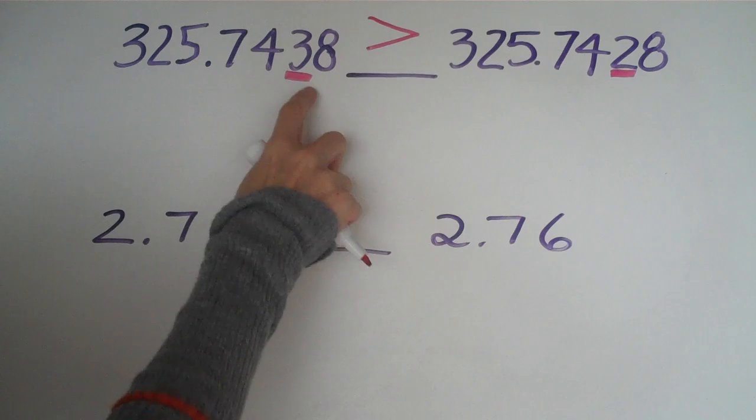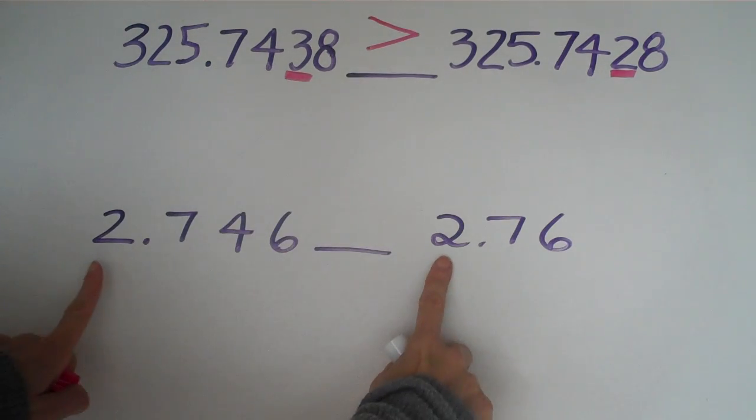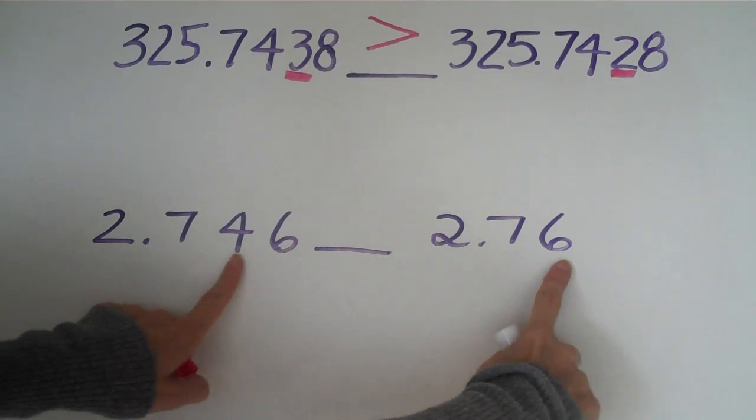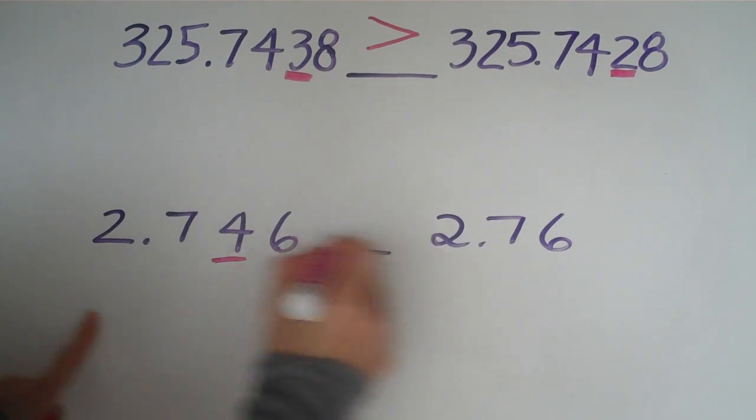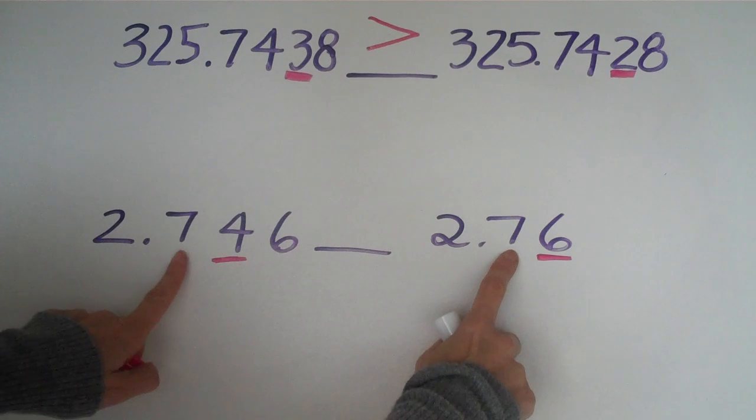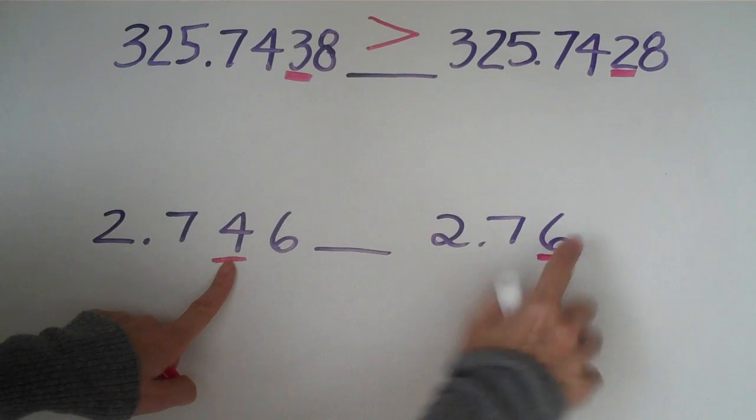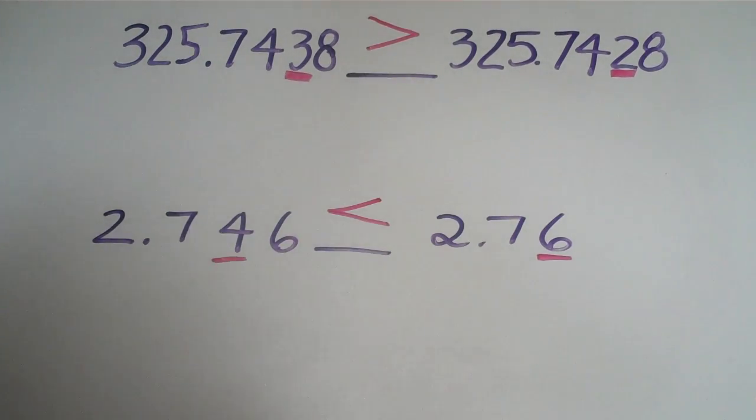So we do the same thing with the next problem. We start from the left, 2, and then the decimal, 7, and then here's the second number from the decimal. These are different and we know the 2 and the 7 are the same. The 4 and the 6 obviously are different. So 6 is greater than 4, so that means this first number is less than the second number.